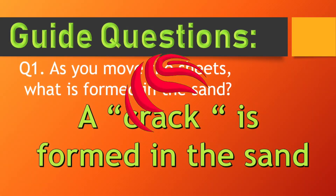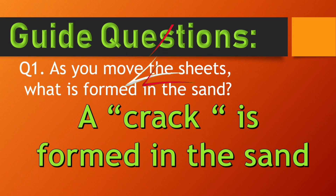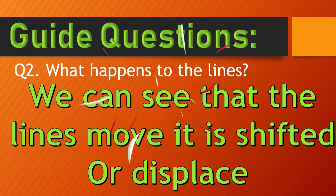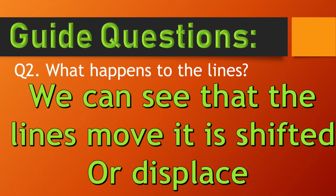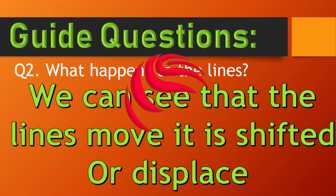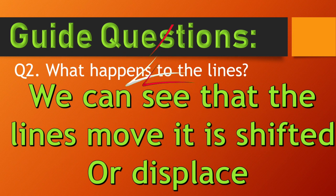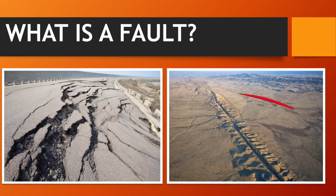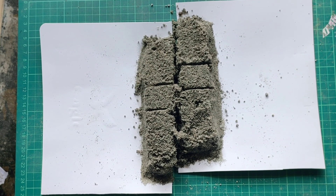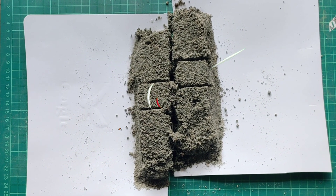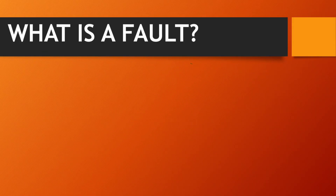Question one: as you move the sheets, what is formed in the sand? A crack is formed on the sand. Question number two: what happens to the lines? We can see that the lines move — it's shifted or displaced. Compare the pictures above and the result of our experiment. Meron ba silang pagkakahawig? Ipaliwanag ito sa inyong notebook.